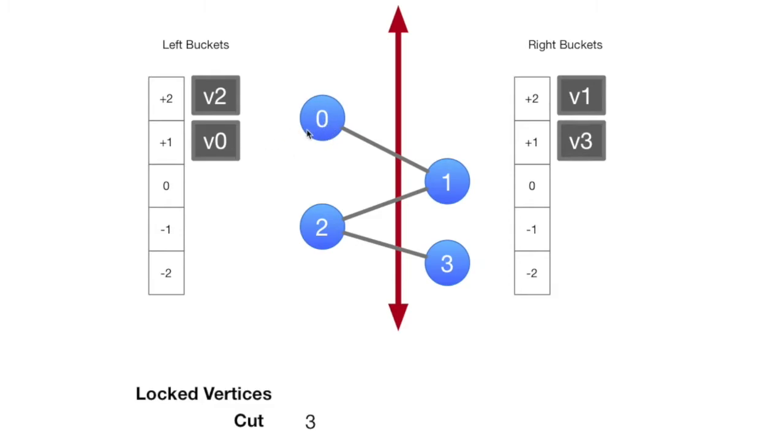Vertex 0 will change by 1 going left-hand side to right-hand side, so it is in the plus 1 bucket. We've got a separate batch of buckets over on the other-hand side. Vertex 1 is in plus 2 because if I move it to the other side, I can reduce the cut by 2. Vertex 3 is in plus 1 because it will improve the cut by 1 if I move it to the other side. So we're going to start out here with our buckets and our data structures.